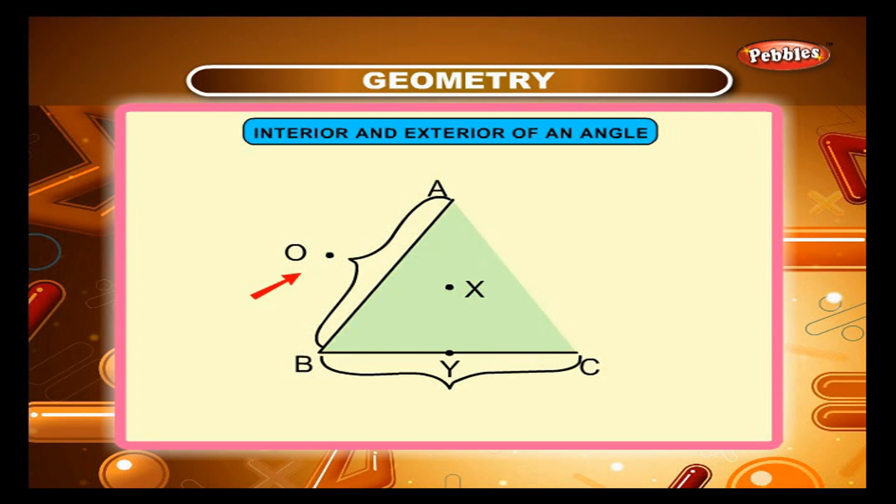The point O is not in the shaded portion. It lies outside angle ABC. We say that it lies in the exterior of angle ABC. The point Y lies on the angle.